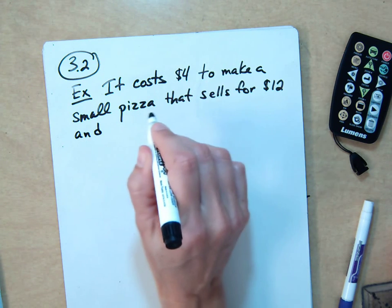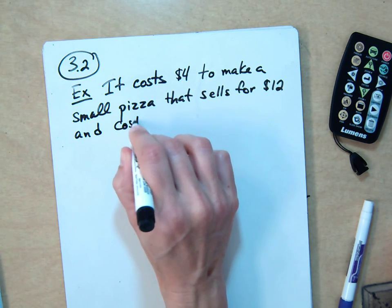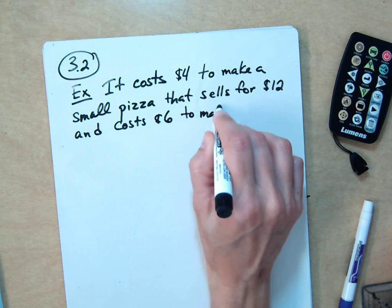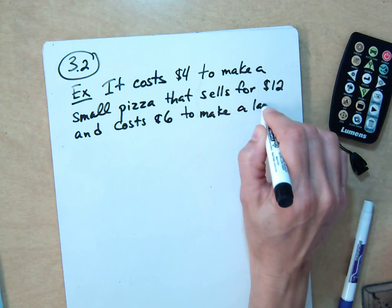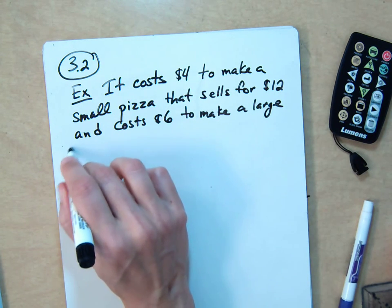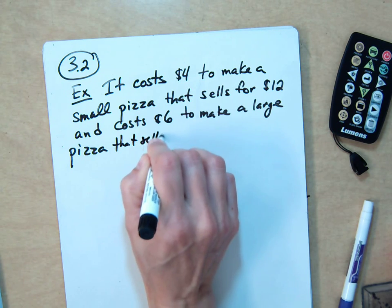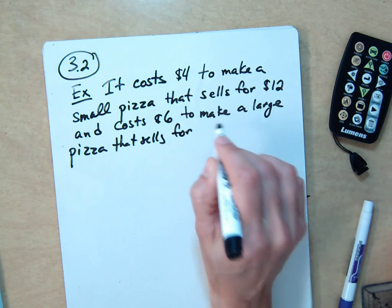And costs $6 to make a large pizza. To make a large pizza that sells for $15.